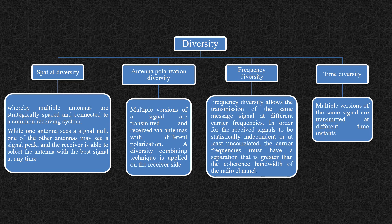In frequency diversity, the same message signal is transmitted at different carrier frequencies so that the received signals are statistically independent or at least uncorrelated. The carrier frequencies must have a separation greater than the coherence bandwidth of the radio channel. In time diversity, multiple versions of the same signal are transmitted at different time instances — at time T1, then T2, and so on — and the best version is chosen at the receiver side.